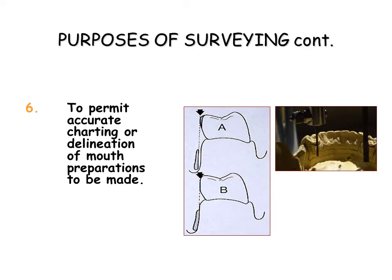19. This includes the disking of proximal tooth surfaces to provide guiding planes and the reduction of excessive tooth contours, to eliminate interference and to permit a more acceptable location of reciprocal and retentive clasp arms. By marking these areas on the diagnostic cast with red pencil using an undercut gauge, to estimate the amount of tooth structure that may safely without exposing dentin be removed, and then trimming the marked areas on the stone cast with the surveyor blade, the angulation and extent of tooth reduction may be established prior to preparing the teeth in the mouth. With a diagnostic cast on the surveyor at the time of mouth preparations, disking and reduction of tooth contours may thus be accomplished with acceptable accuracy.